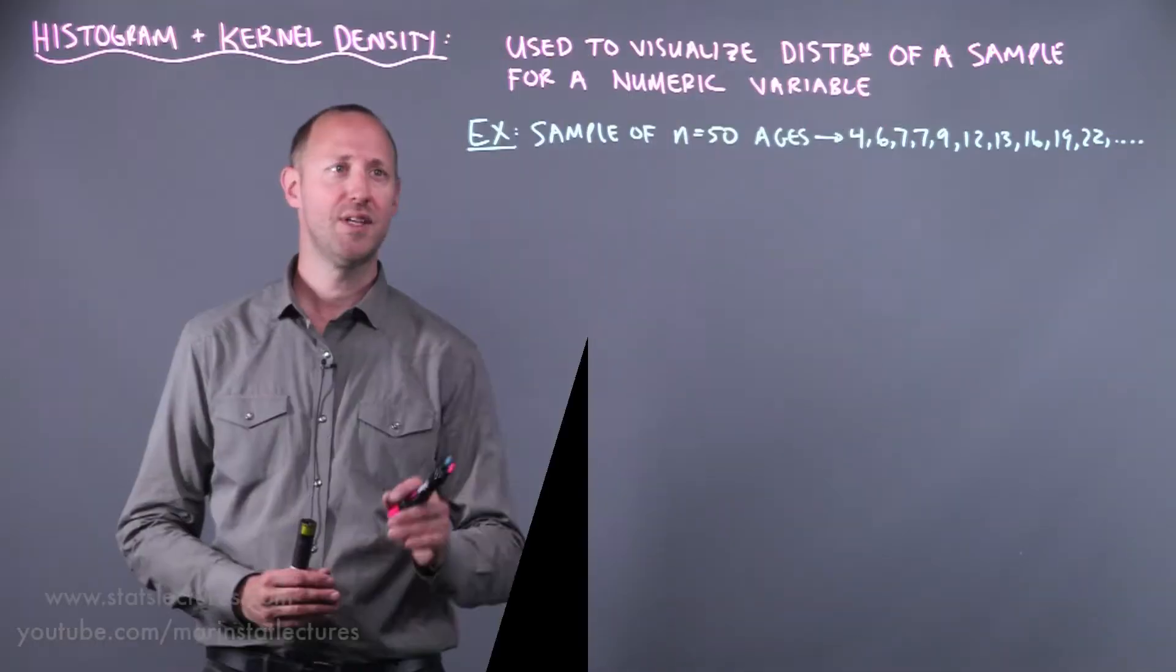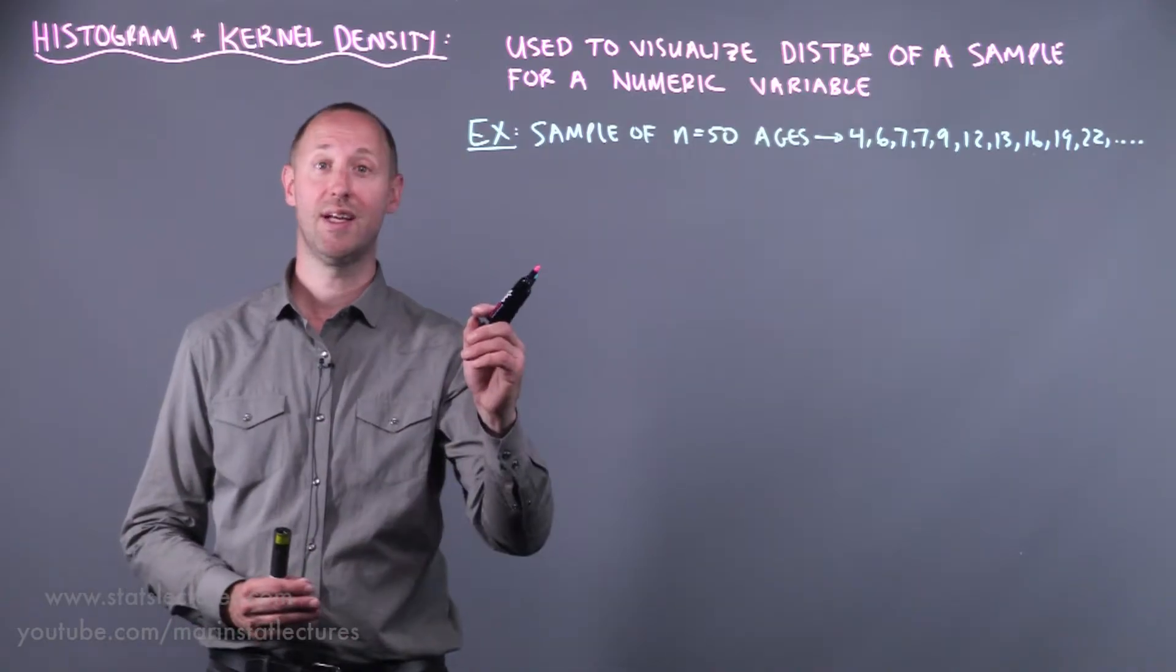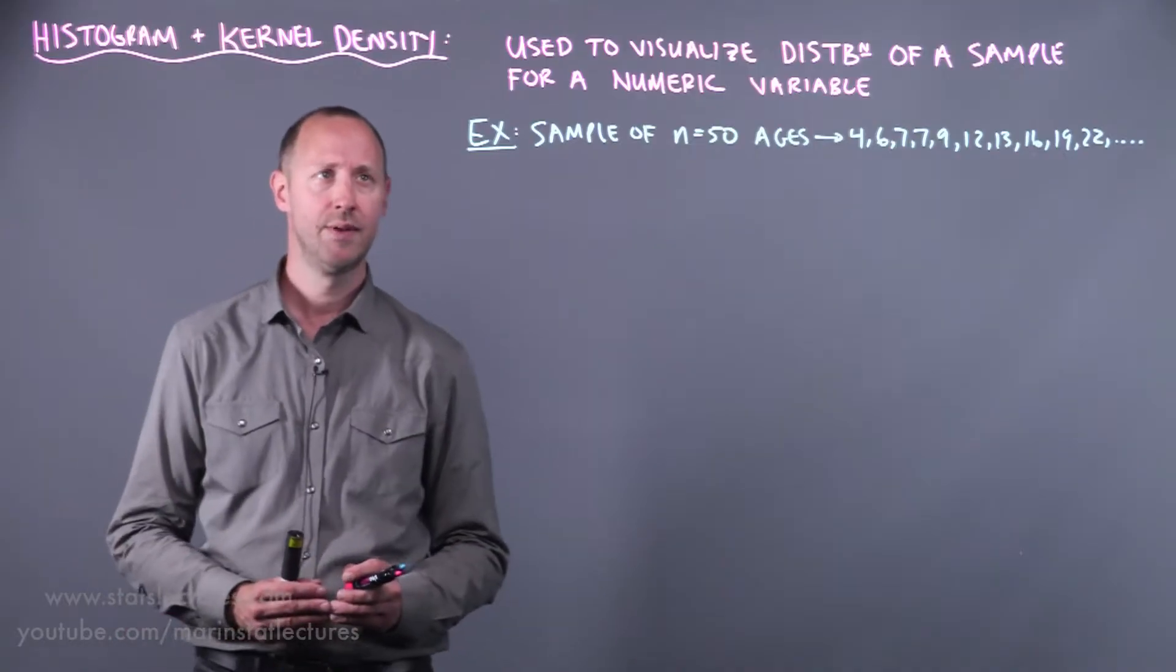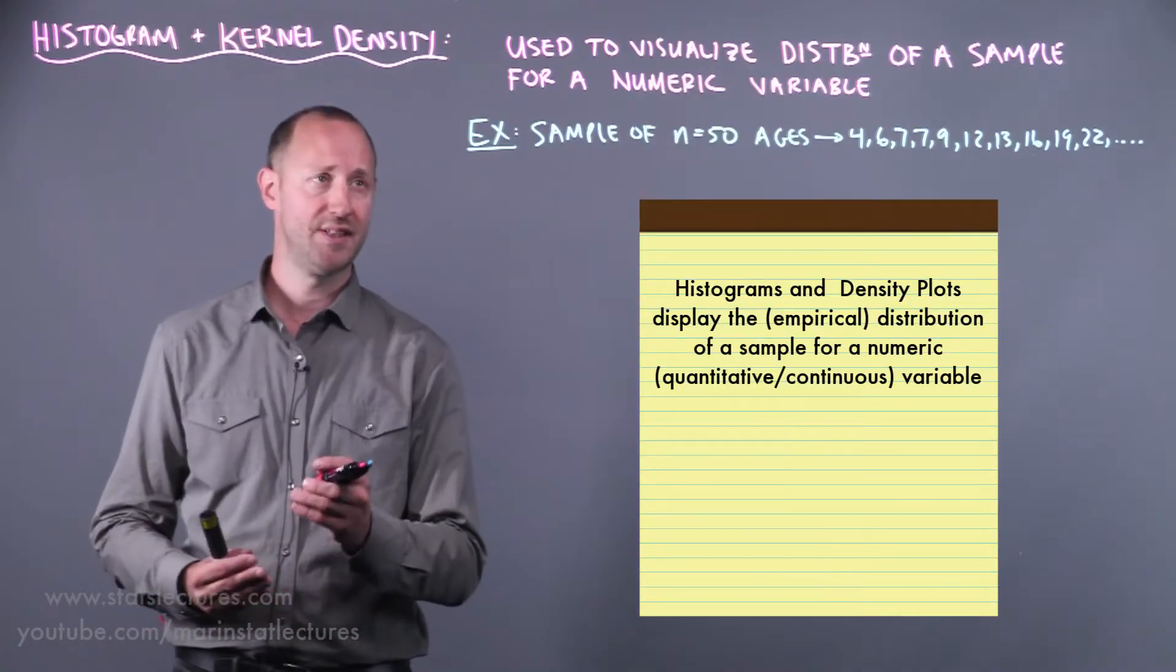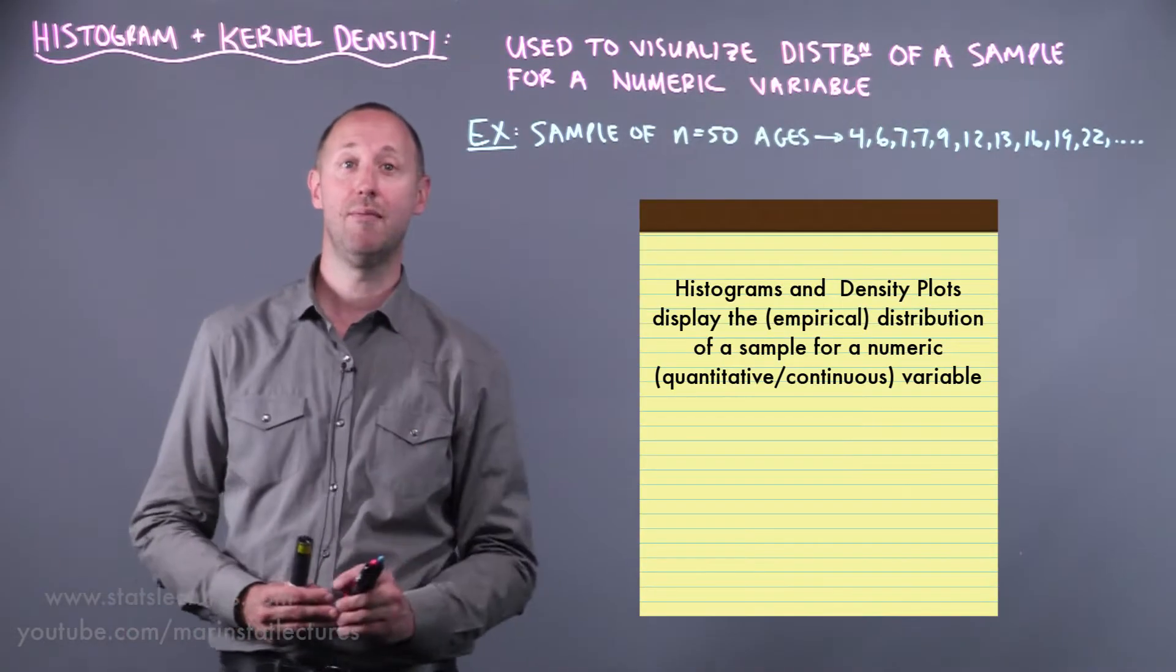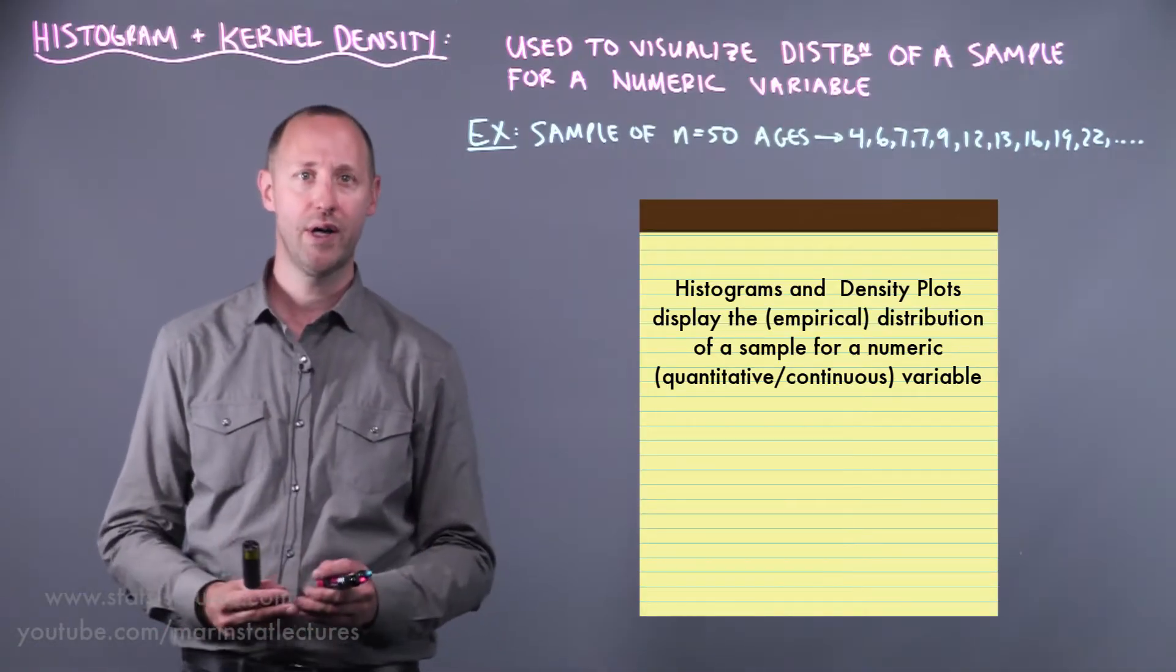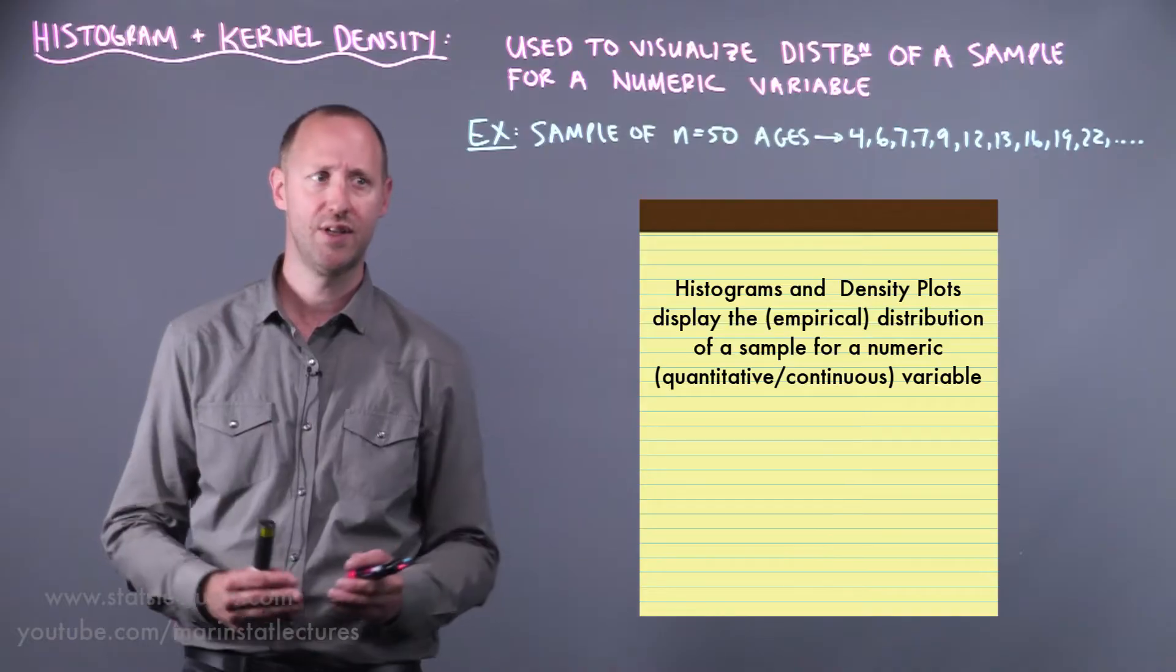We'll start with a simple example, supposing we've collected a sample of size 50 and recorded the ages for a bunch of individuals. So histograms as well as density plots can be used to help visualize the distribution of our sample for a numeric or quantitative or continuous variable.